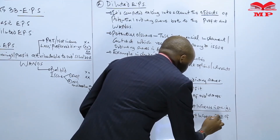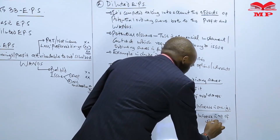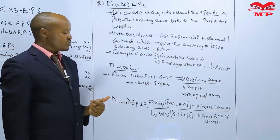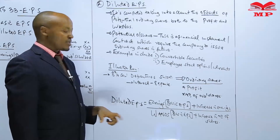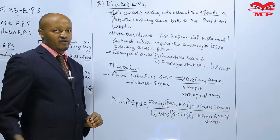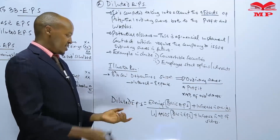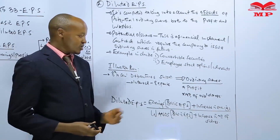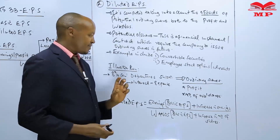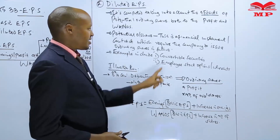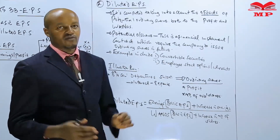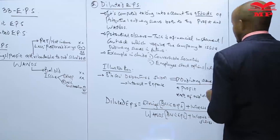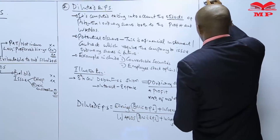Increase in number of shares refers to the number of ordinary shares which would have been issued by the company on the assumption that the convertible debentures were converted into ordinary shares in the course of the year. Before looking at a specific illustration, let us examine how we treat convertible securities and employee stock options for the purpose of computing diluted earnings per share, starting with convertible securities.